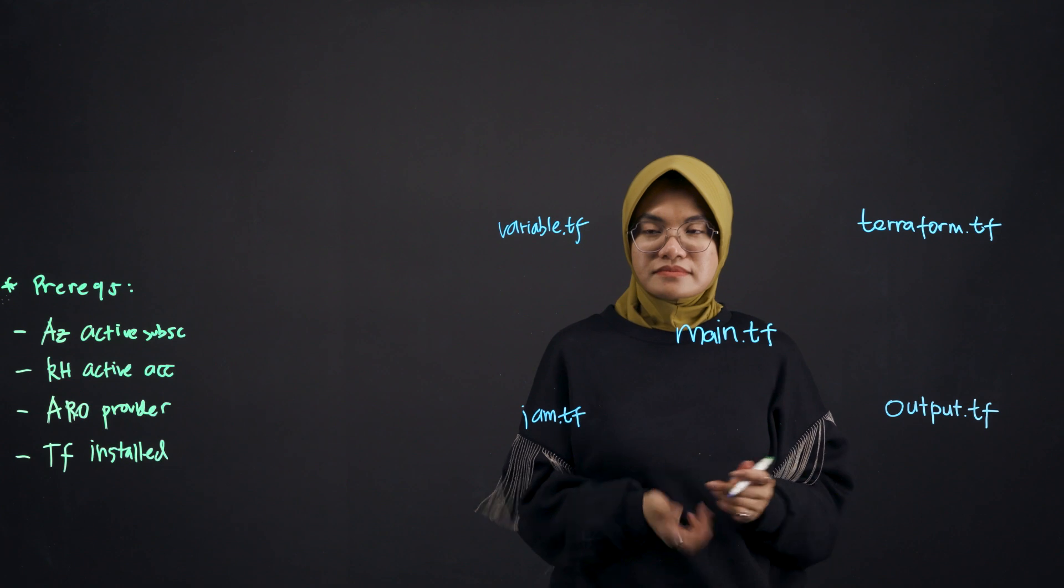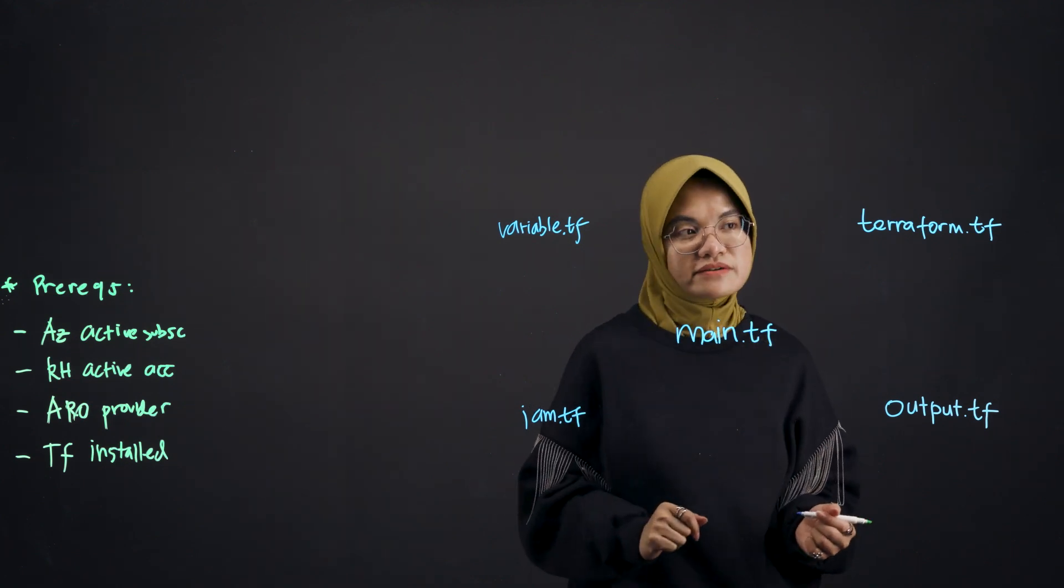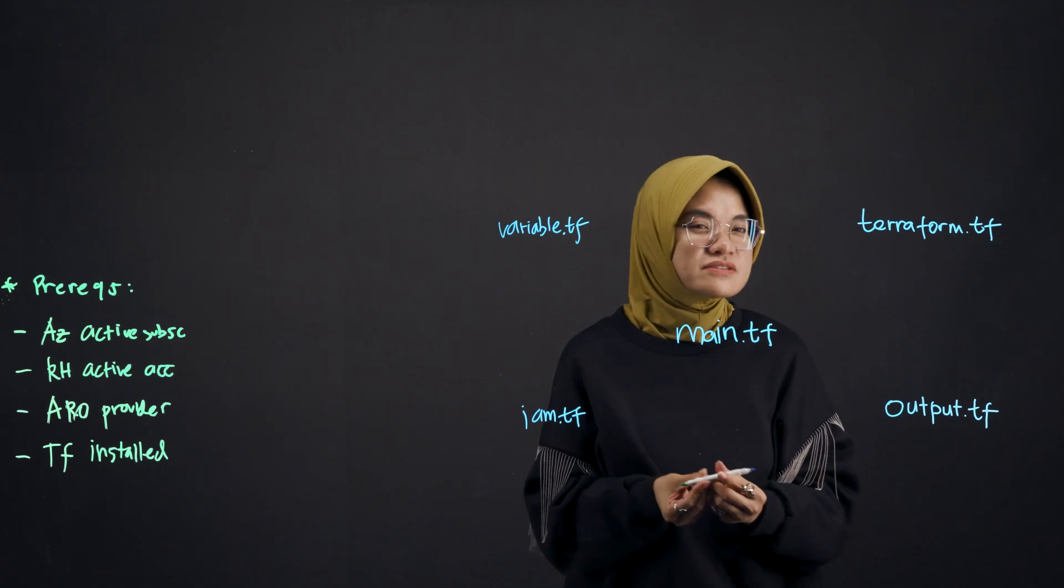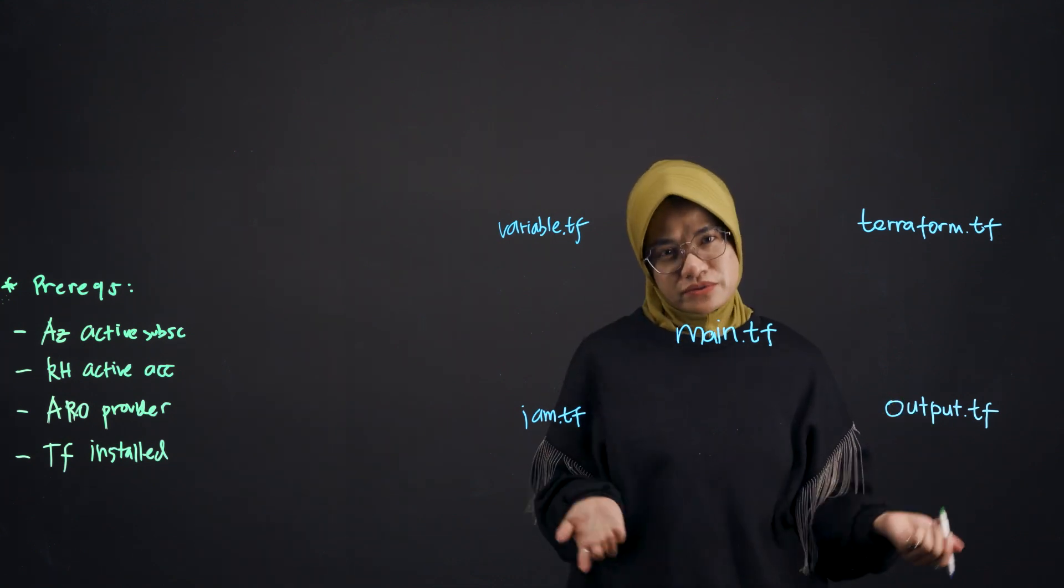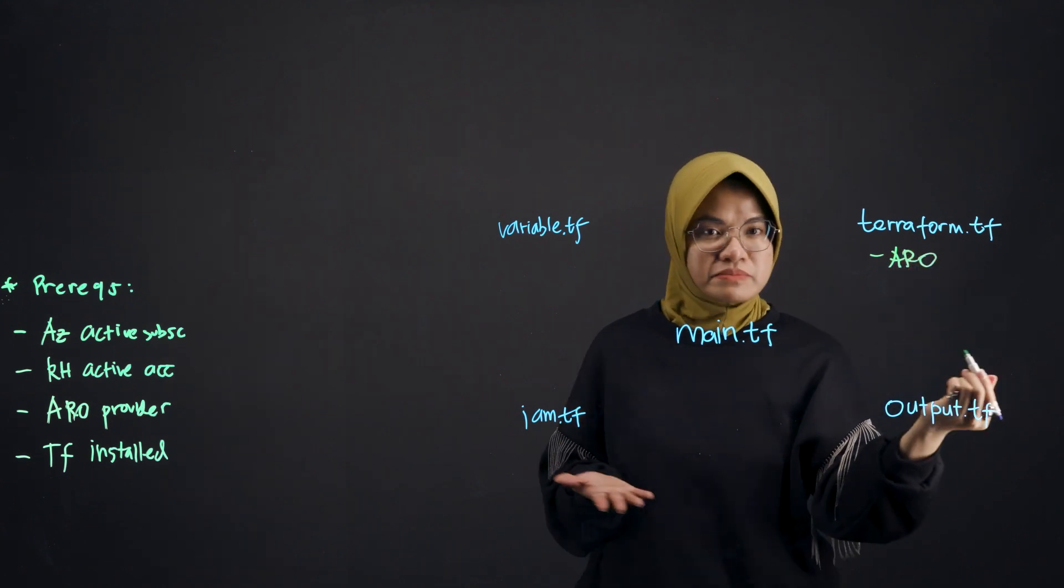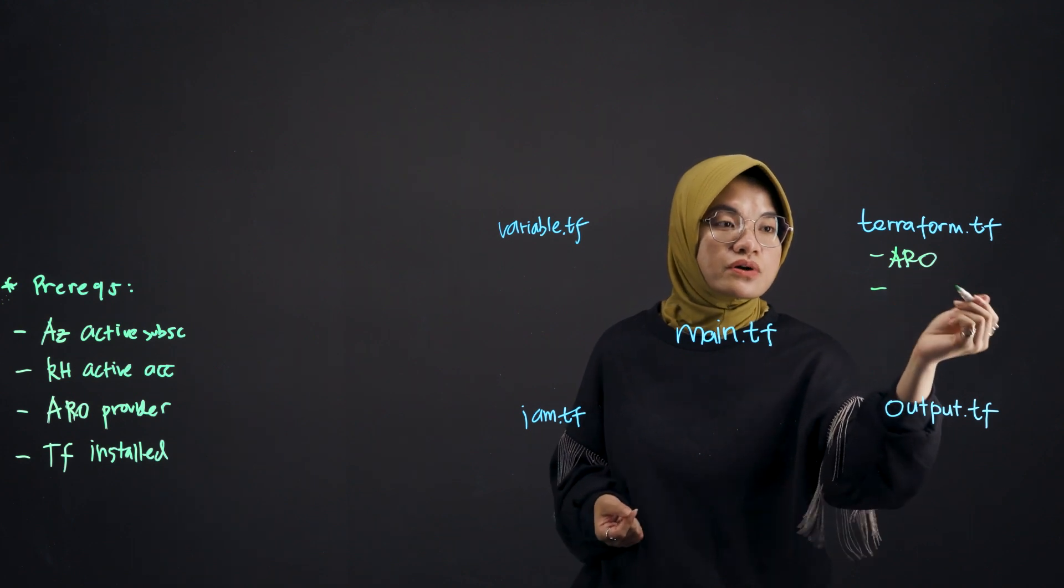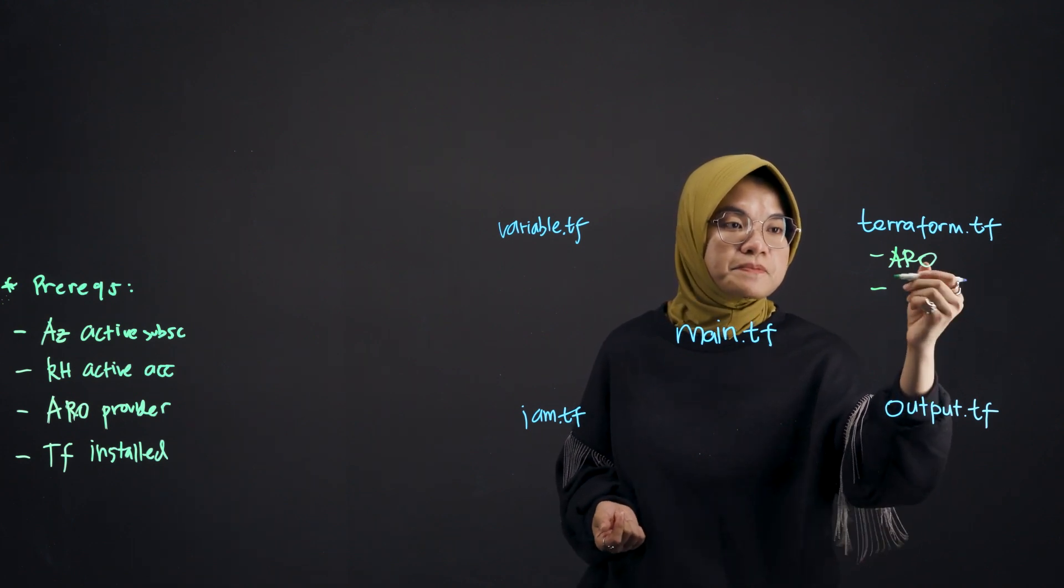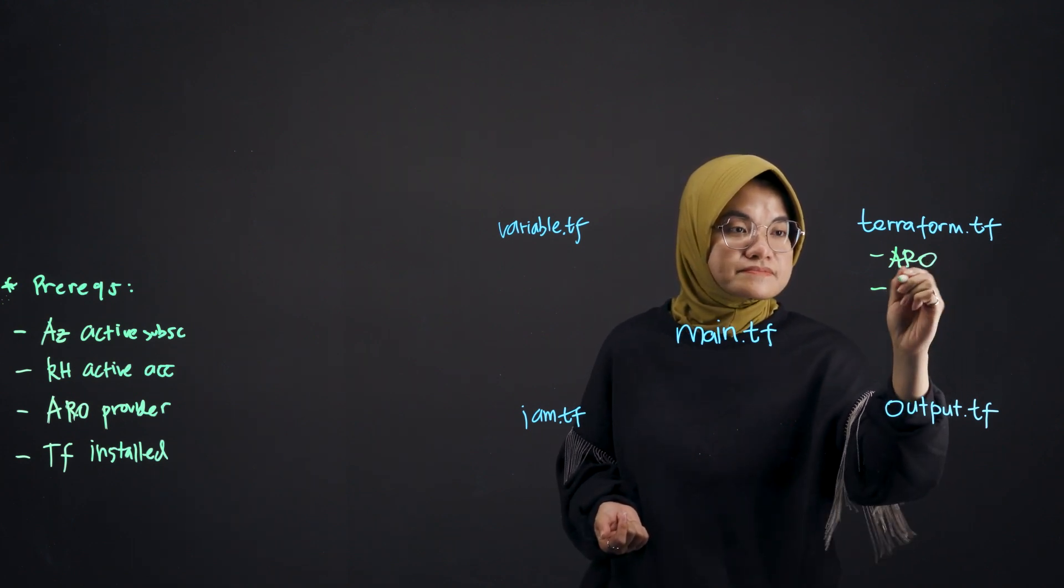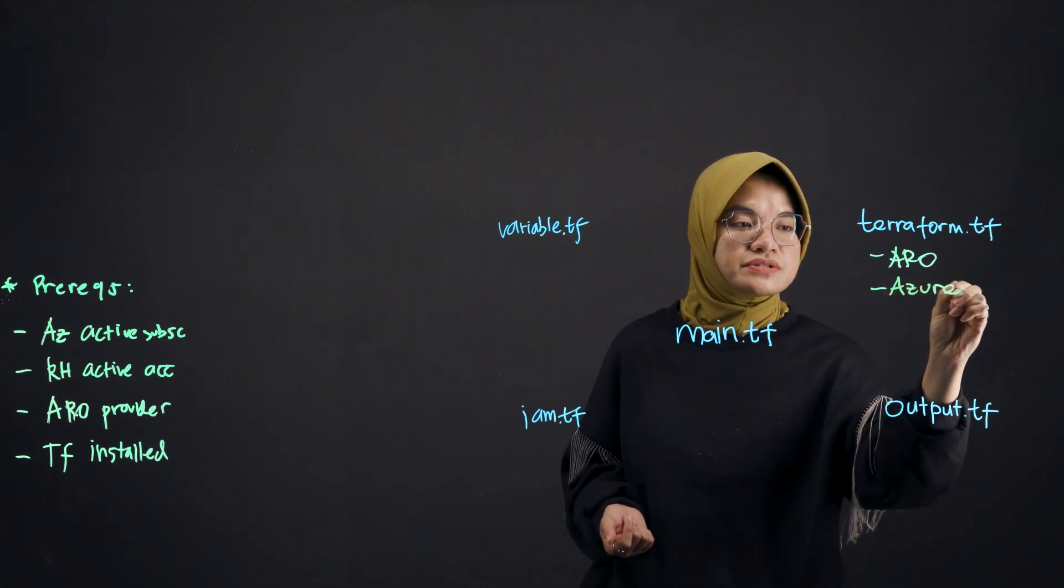And then here, first and foremost, we will do Terraform.tf. Here we will specify which provider you would use. Again, this is just an example, your implementations may vary. Here we will use the Arrow provider and we will also use an Azure provider or Azure service provider.